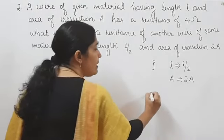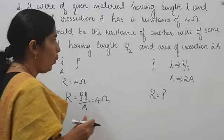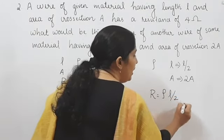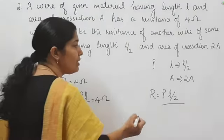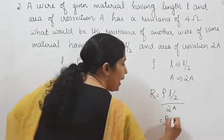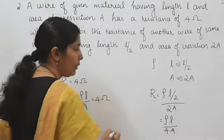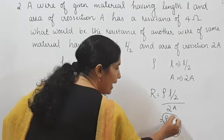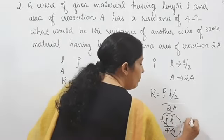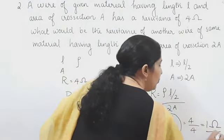For the new wire, resistance R equals rho into L divided by 2, divided by 2A. This simplifies to rho L divided by 4A. Since rho L divided by A equals 4 ohm, the new resistance is 4 divided by 4, which equals 1 ohm.